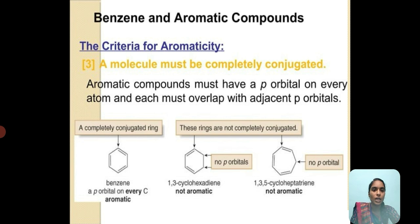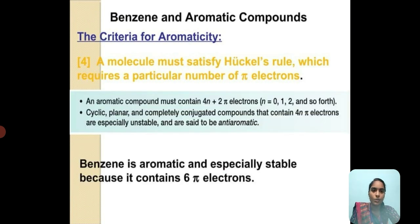A molecule must satisfy Hückel's rule, which requires a particular number of pi electrons. An aromatic compound must contain 4n+2 pi electrons, where n may be 0, 1, 2, 3, and so on. Cyclic, planar, and completely conjugated compounds that contain 4n pi electrons are especially unstable and are anti-aromatic. Benzene is aromatic and especially stable because it contains 6 pi electrons.